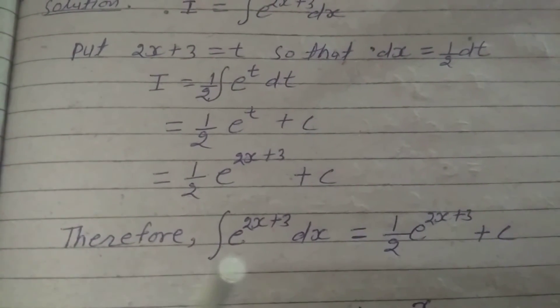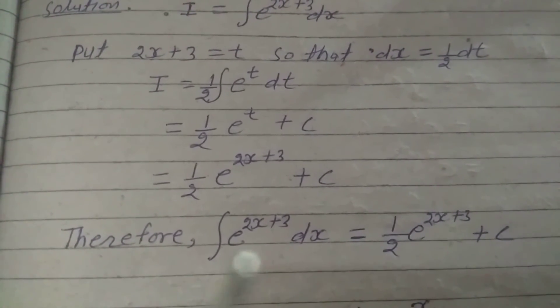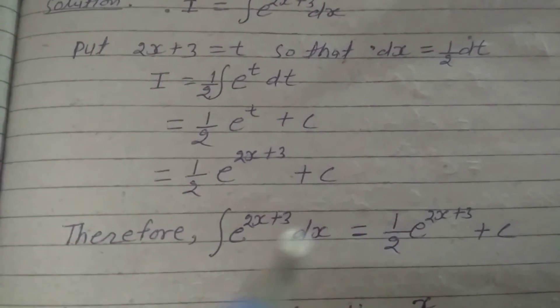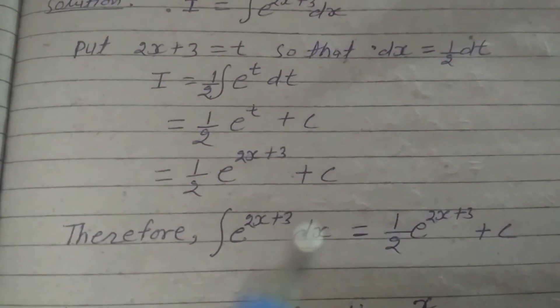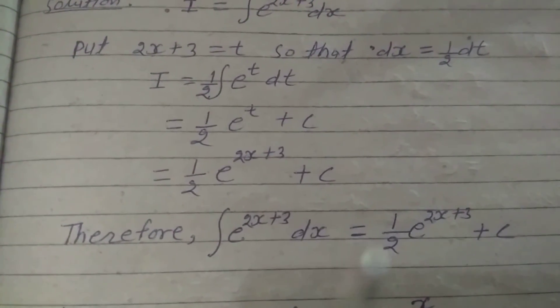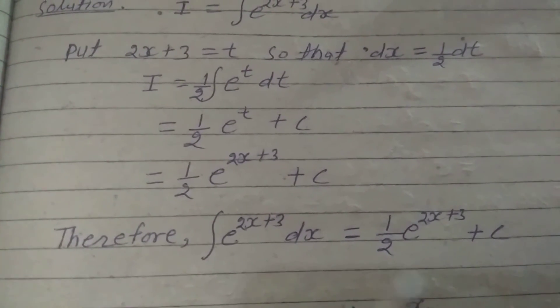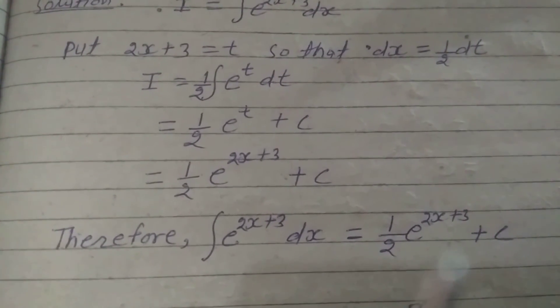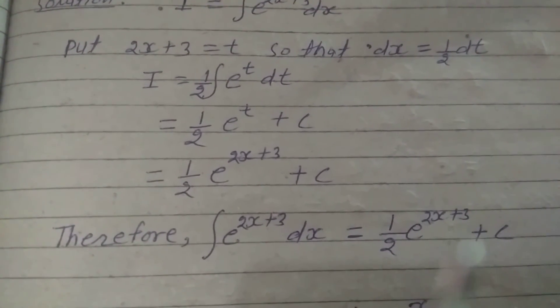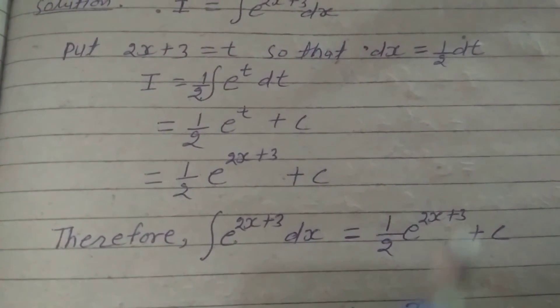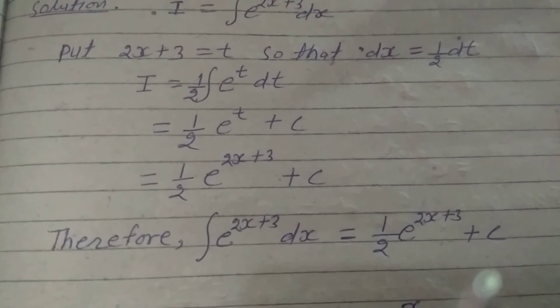Therefore, the integration of e to the power 2x plus 3 dx is equal to 1 upon 2 times e to the power 2x plus 3 plus c. Thank you.